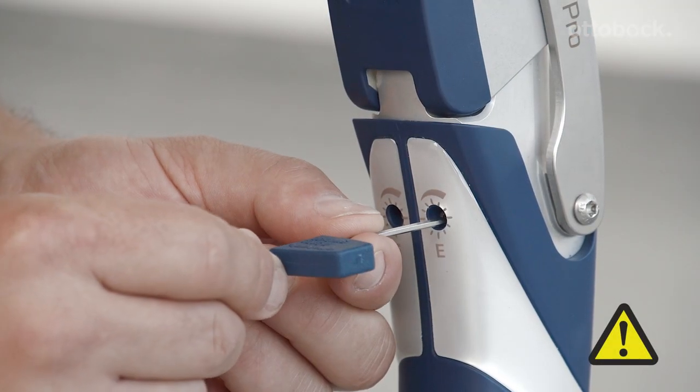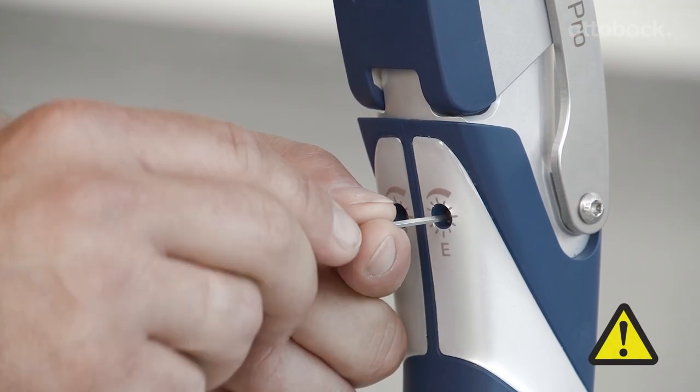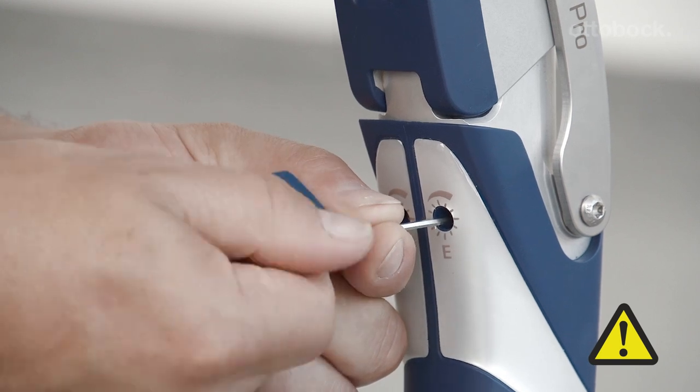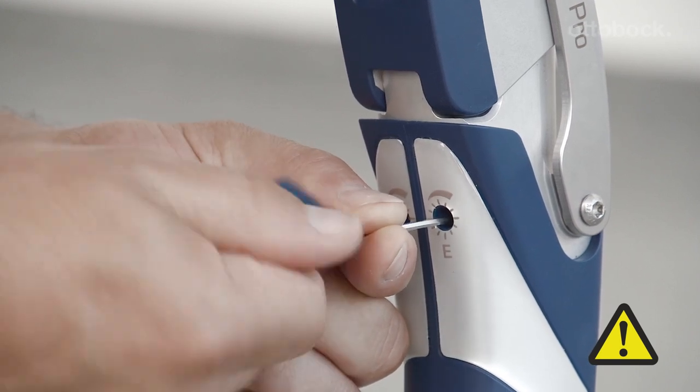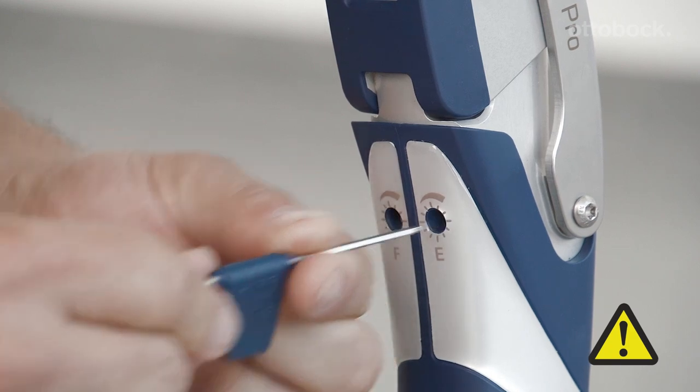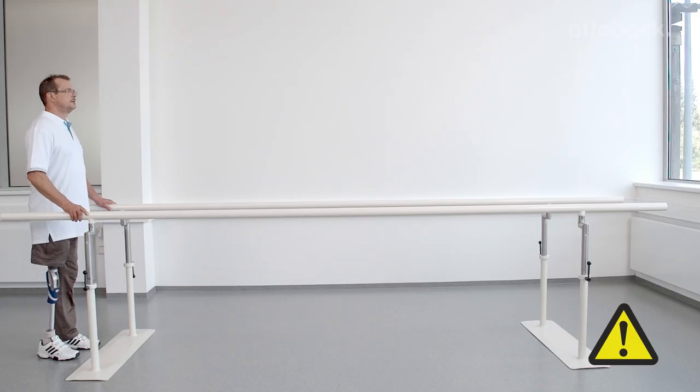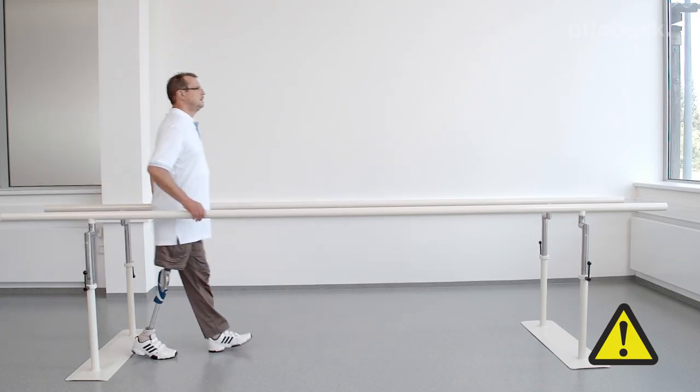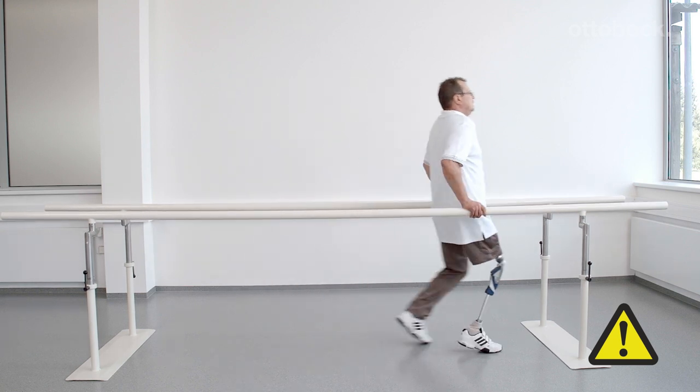It's important to always take small steps when adjusting away from the factory settings for minimum extension damping. As shown here, an extension damping set too high means that the knee joint no longer comes into full extension, which could lead to a fall.